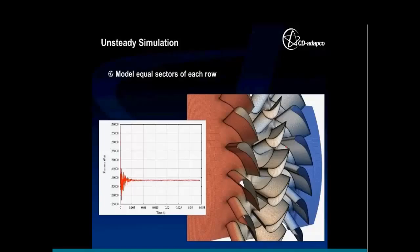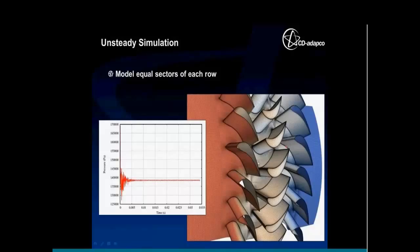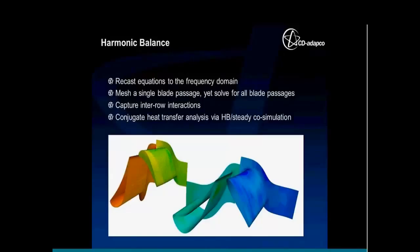The second option is unsteady simulation. We can mesh an equal pitch sector in each of the blade rows — here is a three-row machine, the one-and-a-half stage Aachen turbine — and run the case out until it periodically converges. This is very good because we get blade row interaction effects with wake impingement and thermal stacking, and all the variations from one blade passage to the next. The downside is that it's computationally expensive.